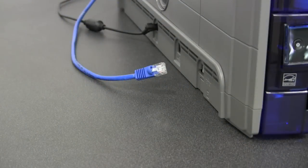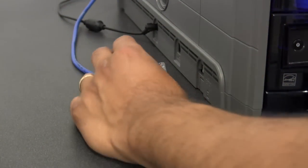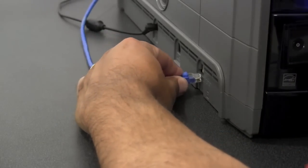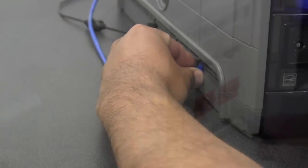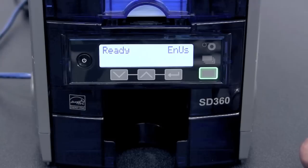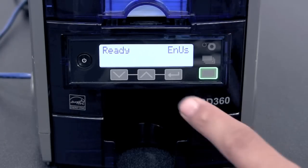Now we will show you how to set up the printer over the network. Take your Ethernet cord and plug it into the printer. Once your network cable is plugged into the printer, you will need the IP address. To get the IP address from the menu,